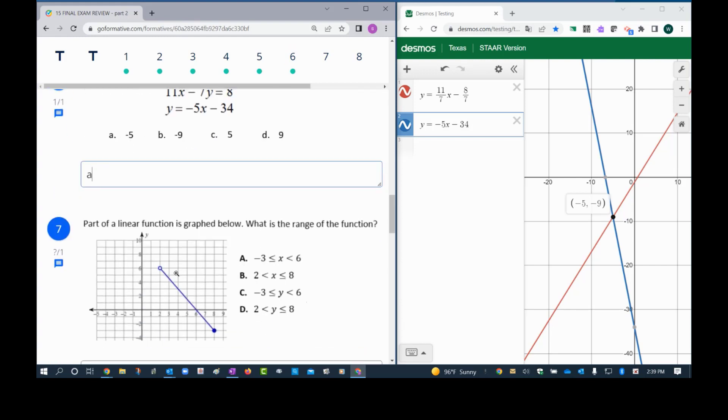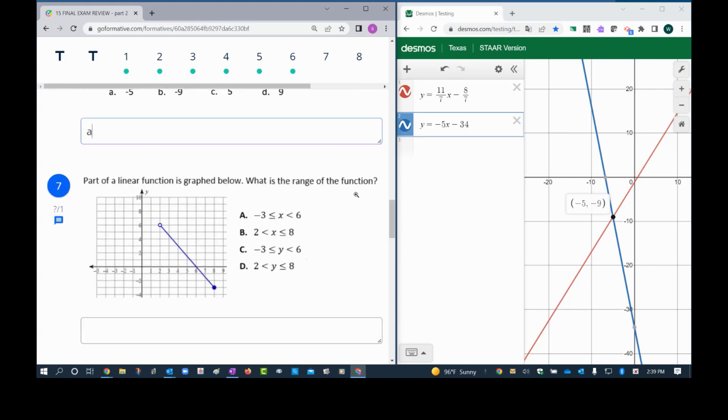Next one is to find the range. The range is when you use a horizontal line and go from bottom up. The first place I touch is negative 3 with a dash, so we can match this one right here, and the last place I touch is 6 without a dash because it's empty, so right there is letter C.